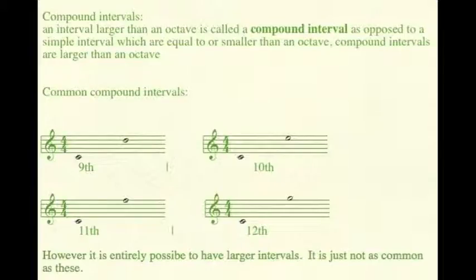Say you have a second, a C to a D, and you want a ninth. That's the D of an octave above that C. All you have to do is add seven to the number.